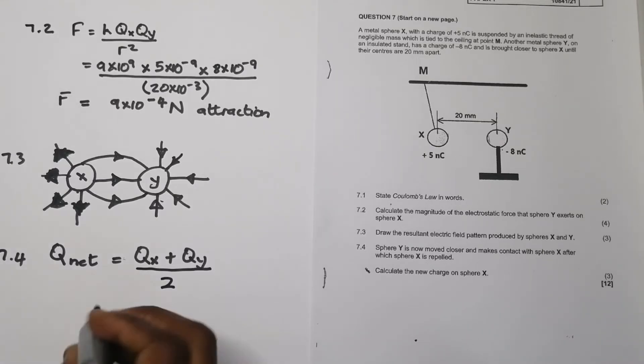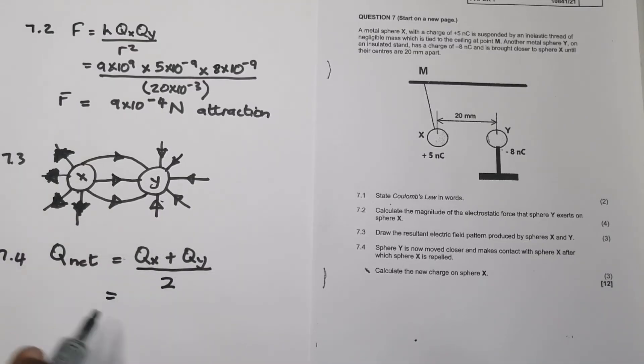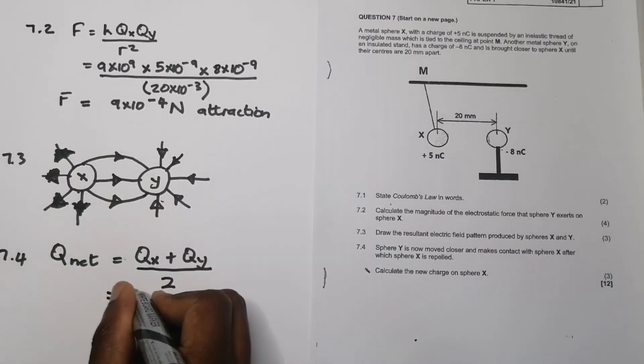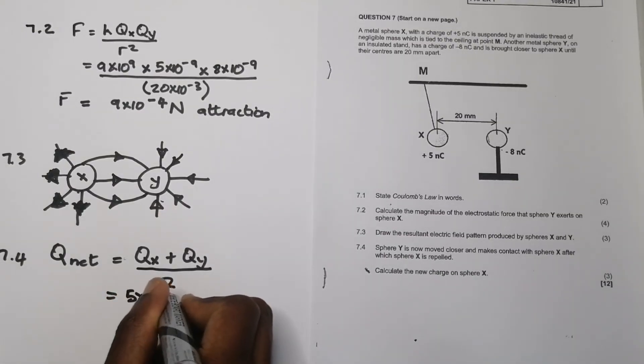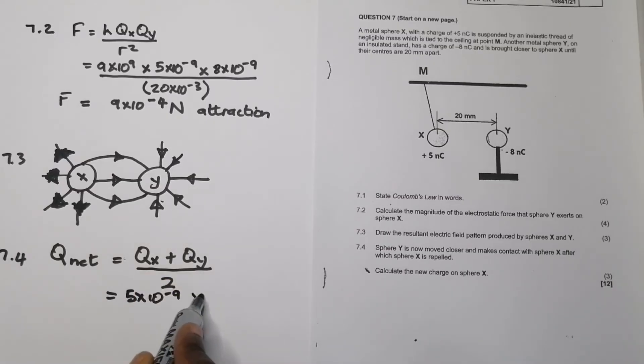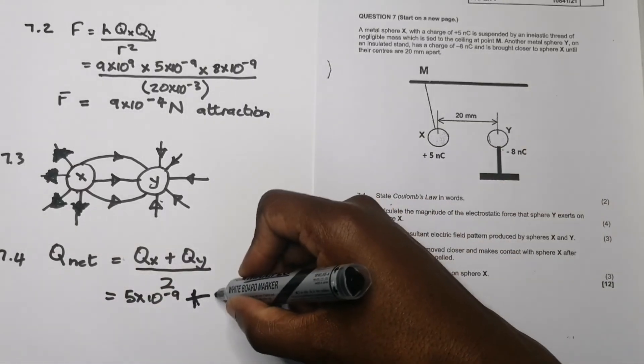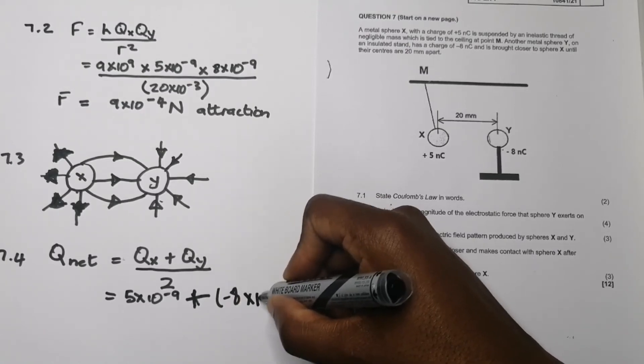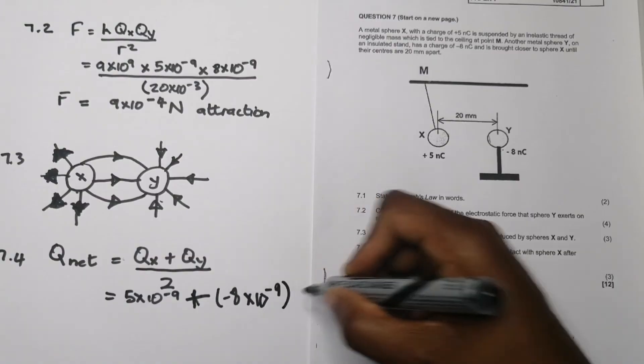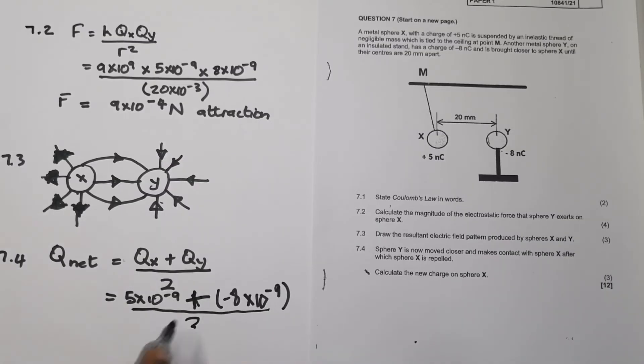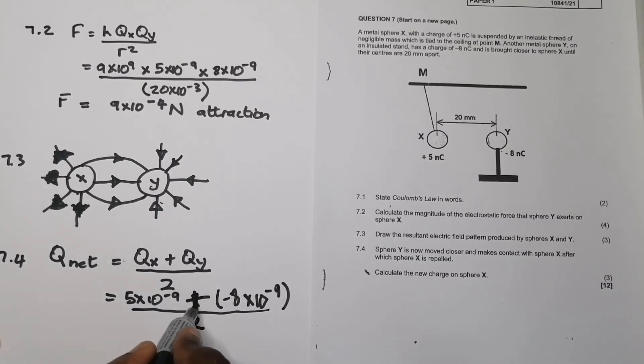So now, all I'm simply going to do, this is the only part in electrostatics where I'm going to take the magnitude as well as the polarity. So Q_X was positive. So that's 5 times 10 minus 9. Plus, I'm going to take that negative 8. So I'm adding negative 8 times 10 to the power minus 9. And we divide that by 2. So what would be the magnitude of our new charge?